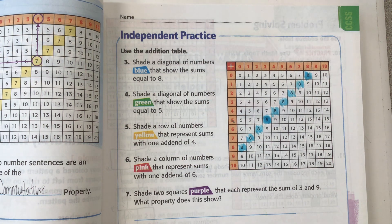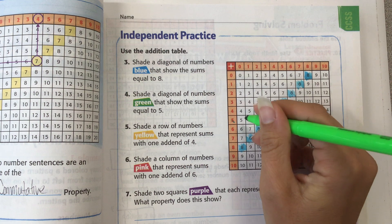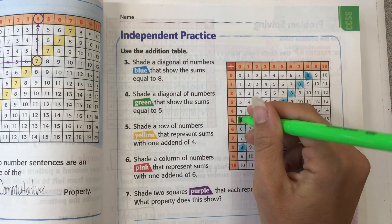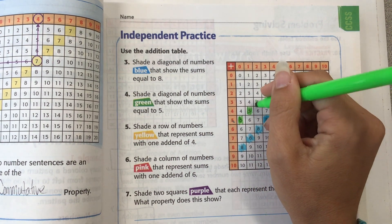Shade a diagonal of numbers green that show the sums equal to five. So we're going to find the fives, and we're going to shade these green.